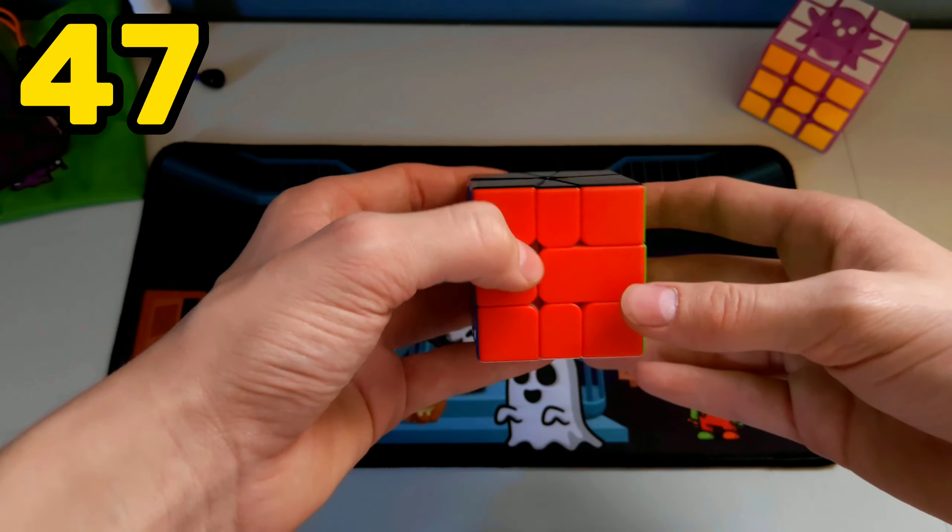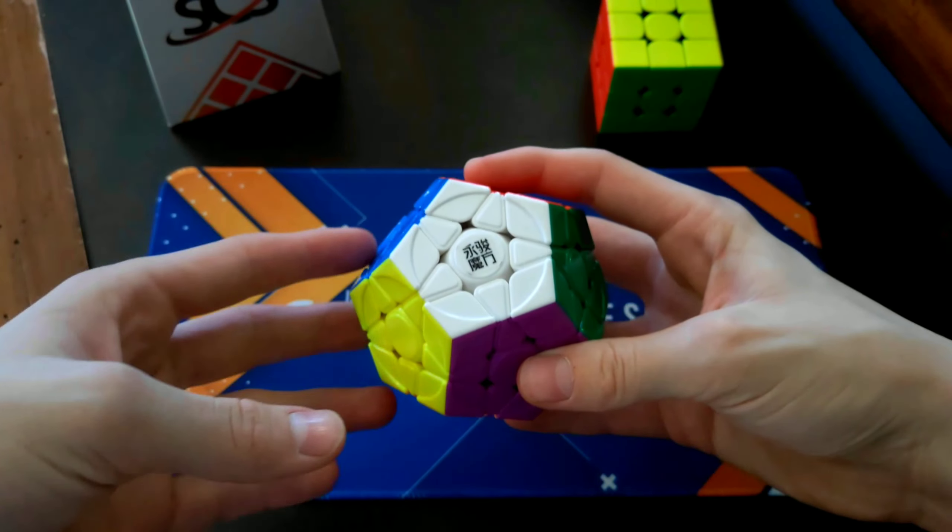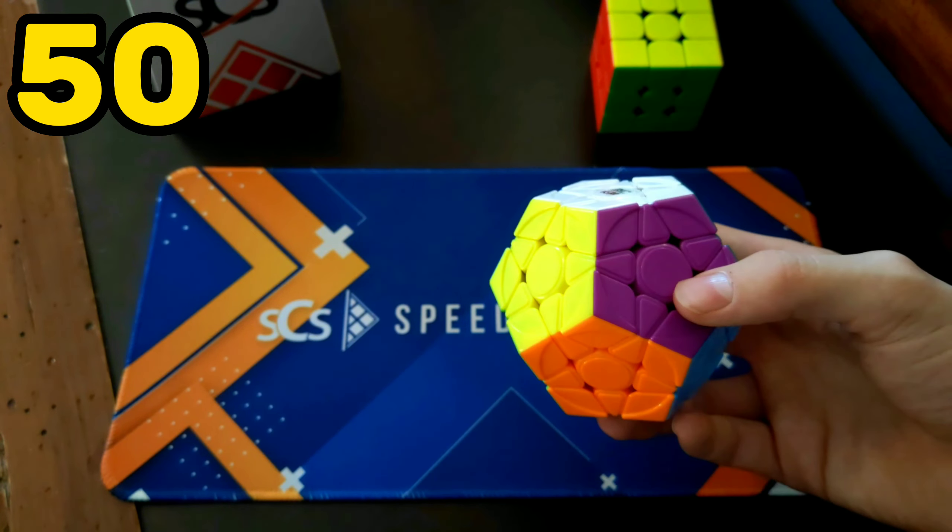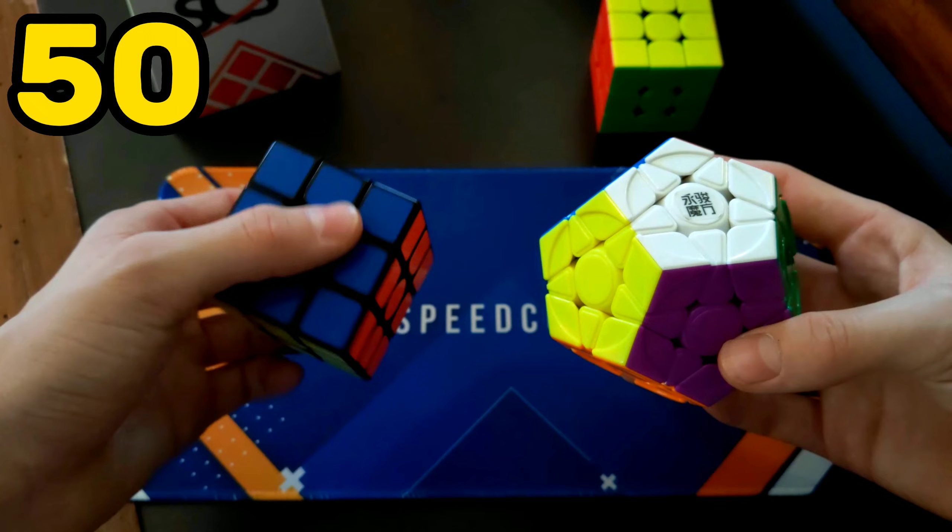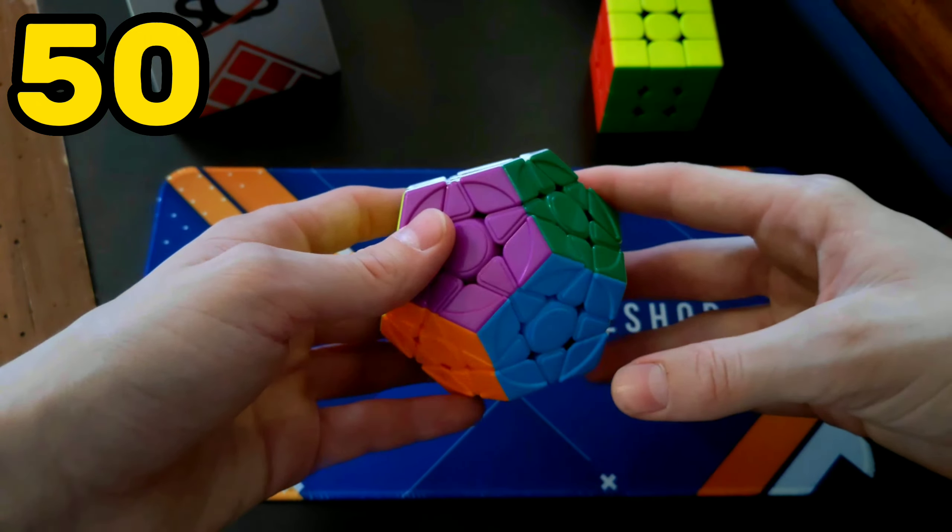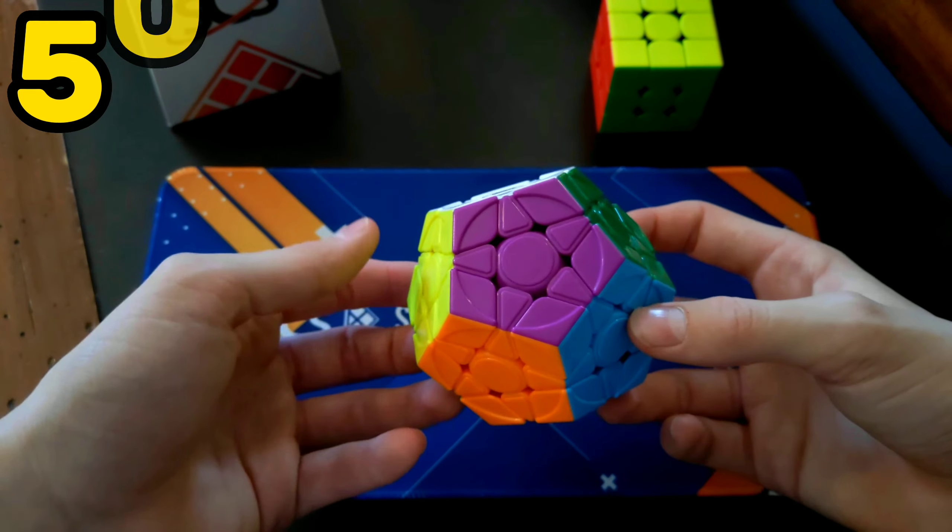The Mega Manx. Instead of having six sides like a 3x3, it has 12 sides. But it's fairly simple if you know what you're doing.